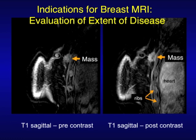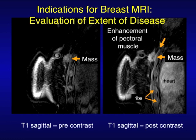Here is the mass after you gave the dye. You can see how it lights up and gets white. And then you can see there's also dye in the heart. And then this here — this little line going up along the chest wall — is actually enhancement along the pectoral muscle.